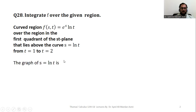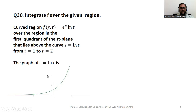To solve this question, we must first know the graph of s = ln(t). Note that we have the st-plane, where s is our horizontal axis and t is our vertical axis. The graph of s = ln(t) looks like the exponential function e^s.